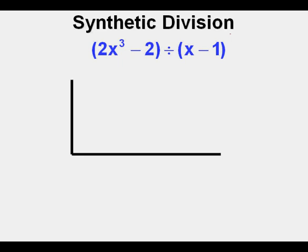We start by taking this number here, negative 1, and changing the sign to positive 1 and placing it here at the left of the frame. And after that, here is where the numbers go into the frame. We have 2, 0, 0, and negative 2. Where did these two zeros come from?